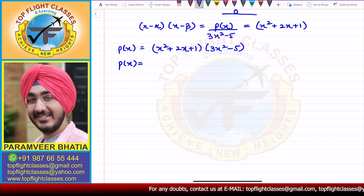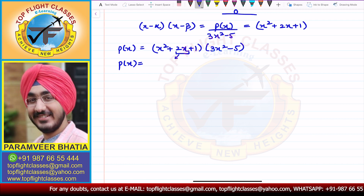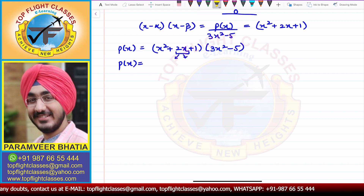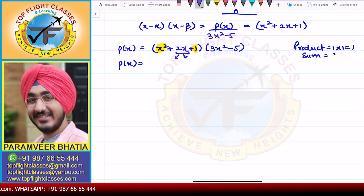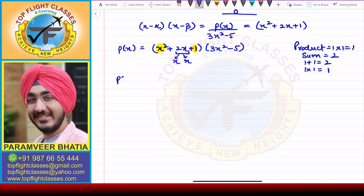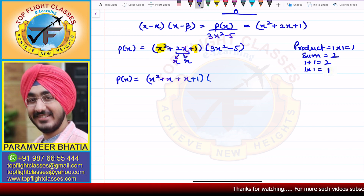We can write p(x) = (x² + 2x + 1)(3x² - 5). Now for x² + 2x + 1, we can do splitting of the middle term. We need two terms whose product equals 1 × 1 = 1 and sum equals 2. So 1 + 1 = 2 and 1 × 1 = 1. Splitting gives x² + x + x + 1, multiplied by 3x² - 5.